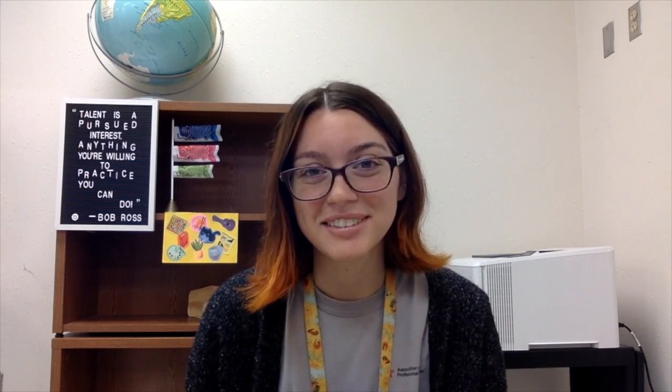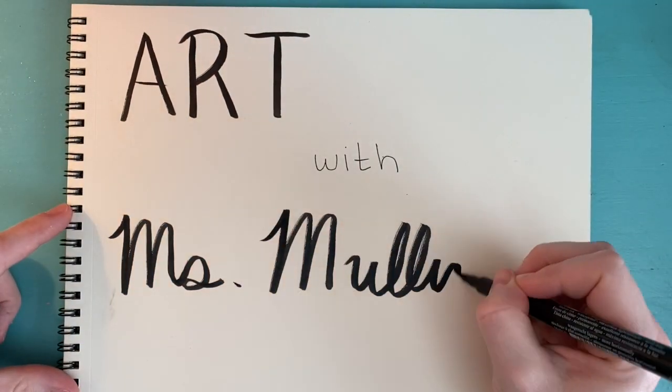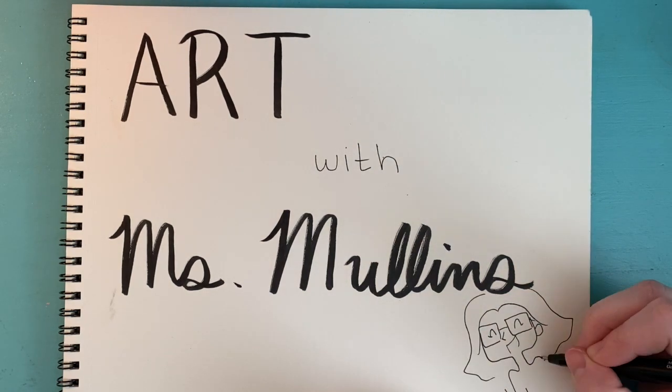Today we're going to make a weaving out of paper and use our friend the snake to help us remember the pattern: over, under, over, under. Let's get started. Let's make art together with Ms. Mullins today.